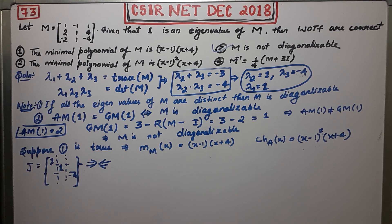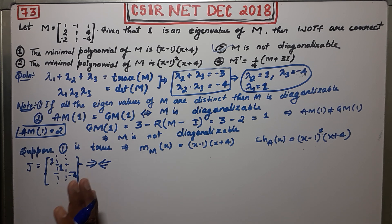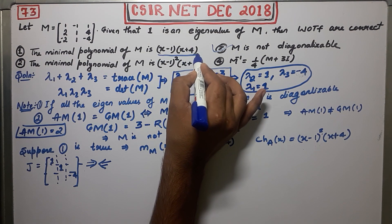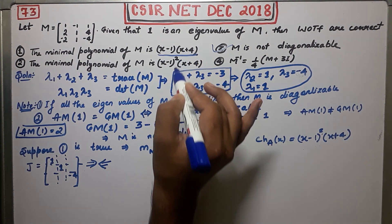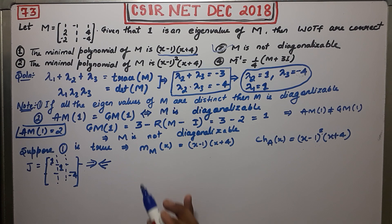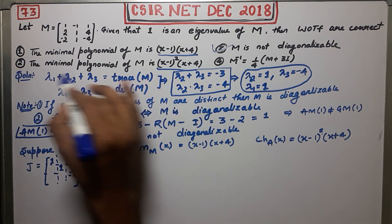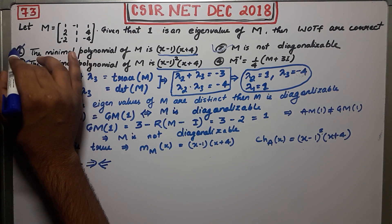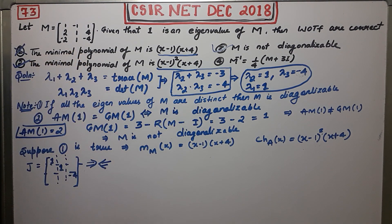Since every root of the characteristic polynomial must also be a root of the minimal polynomial, and option one is ruled out, the only remaining possibility is option two: the minimal polynomial is (x minus 1) squared times (x plus 4). So option two is correct and option one is incorrect.